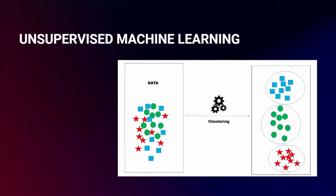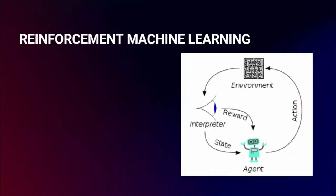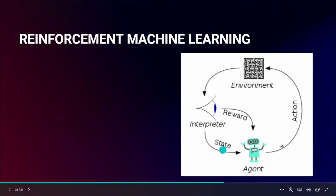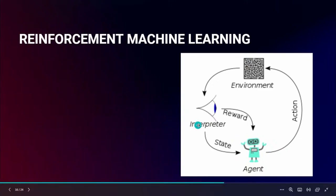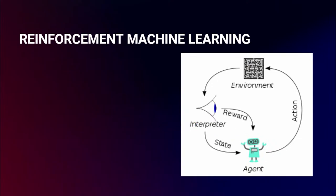The third type of machine learning is reinforcement learning. It is like a reward mechanism: an agent performs an action, and an interpreter evaluates it. If the action is correct, it gets a reward; if it fails, it is improved. It is like a feedback mechanism where the model keeps improving based on the reward it receives.